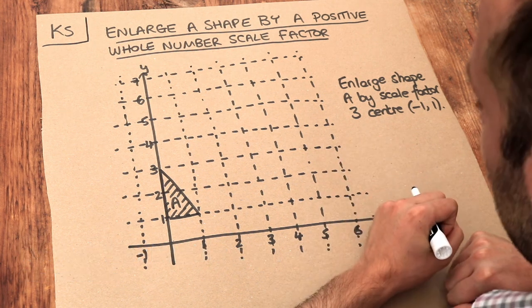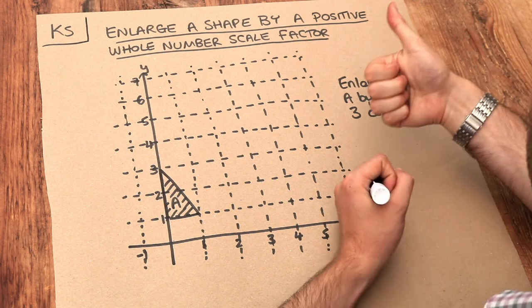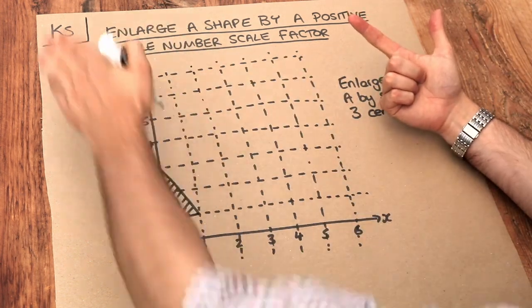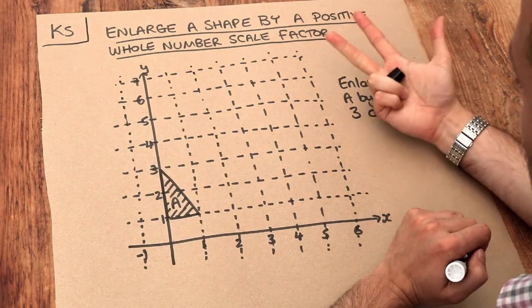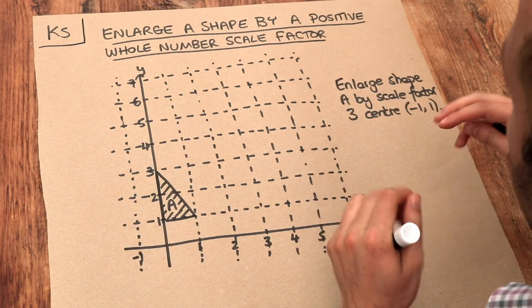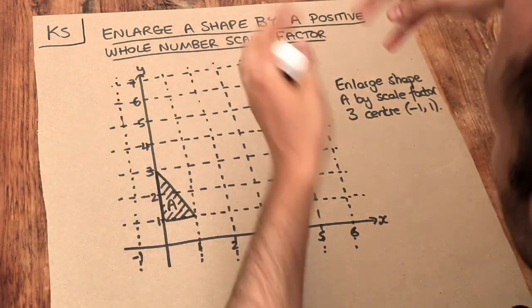Now enlargement is one of the four types of transformation. We've got translations when the shape moves, rotations when the shape spins around, reflections where the shape flips over, and finally enlargements where either the shape gets larger or smaller.